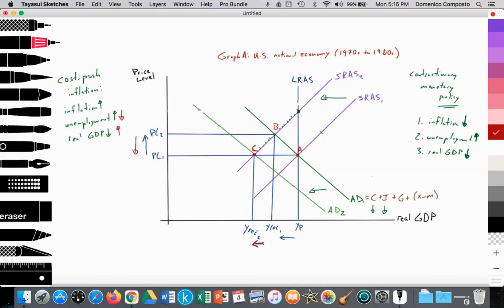But it comes at the trade-off of rising unemployment. So the U.S. economy went deeper into recession, from Y recession 1 to Y recession 2. And as a result of the fall in aggregate demand, the quantity of aggregate supply is decreasing. So firms continue to fire labor. So unemployment is rising. With contractionary monetary policy, the U.S. was successful in reducing inflation, but it came at the cost of rising unemployment and a deeper recession.